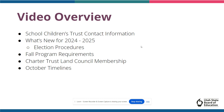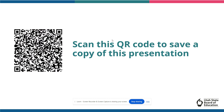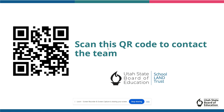Today's presentation will include information on election procedures, fall program requirements, information regarding council membership, and important October deadlines for charter schools. Since this presentation will have a good amount of information, we have generated this QR code for you to save a copy of this presentation to use as a reference as you begin working with your trust land councils. You may also use this QR code to send our team an email with any questions or for any additional support that your councils may need.